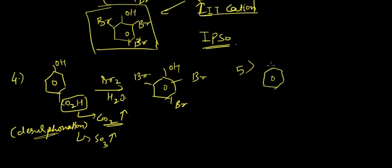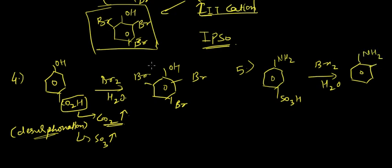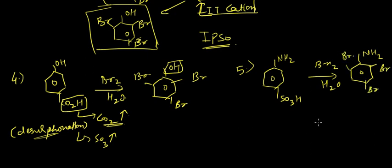Now let's see this example with an SO3H group and Br2 in presence of water. Obviously this would be the product, the same product with Br on ortho and para positions. Ipso substitution takes place here also with the release of SO3 gas.